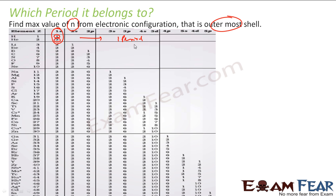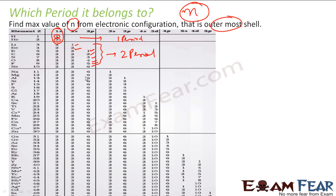For lithium, the maximum is 2s; for beryllium also 2s; for boron it is 2p — so the maximum value of n is 2. For carbon, nitrogen, oxygen, and fluorine, the maximum value of n is also 2 (2p). So all these elements are in the second period. For sodium, the outermost electron is in 3s, so it is in the third period.